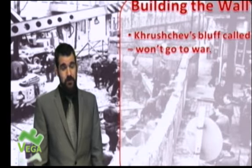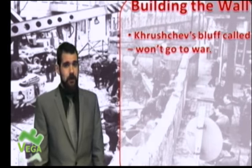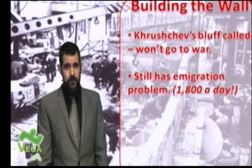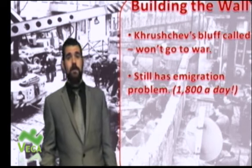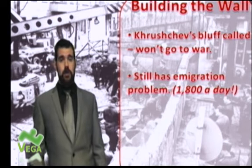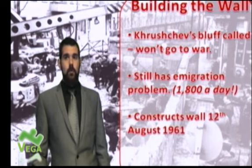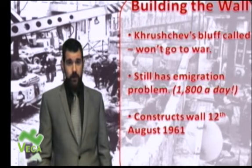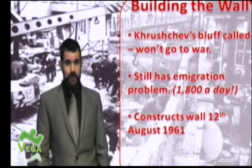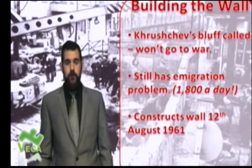Effectively, Khrushchev's bluff is being called. He won't go to war over Berlin either, but he can't be seen to back down completely. The wall is a compromise in Khrushchev's mind — he still has the emigration problem of 1,800 people a day to stop. On the 12th of August 1961, the wall is constructed overnight, starting as barbed wire and very quickly becoming concrete, eventually becoming a formidable fortification.